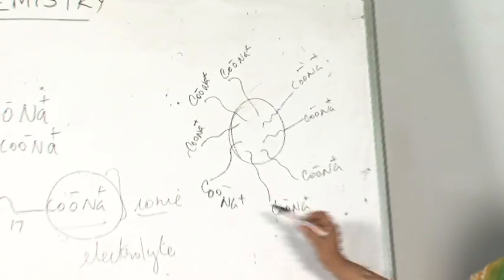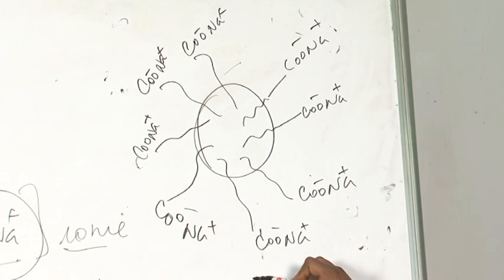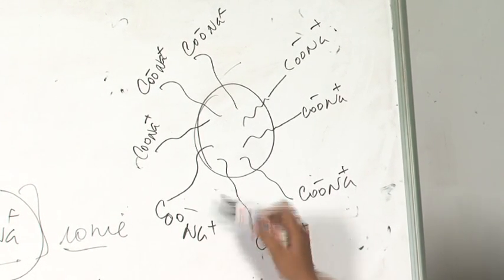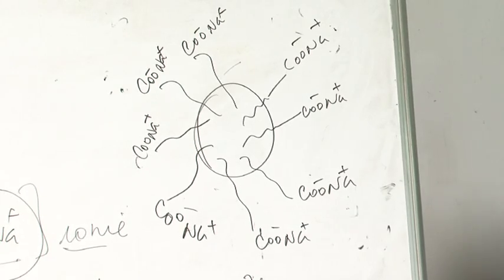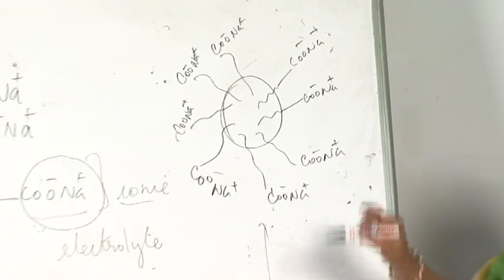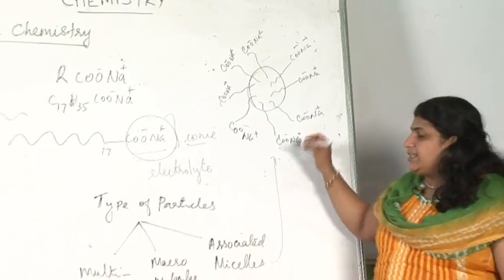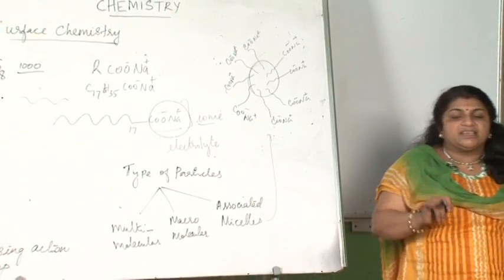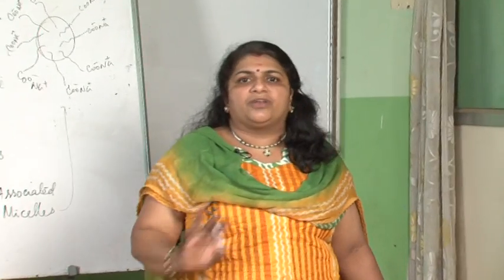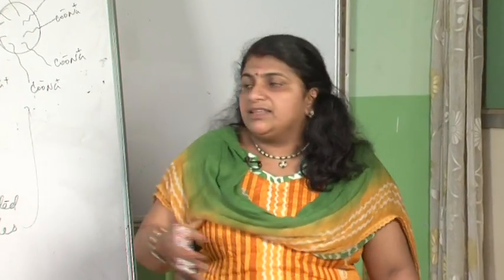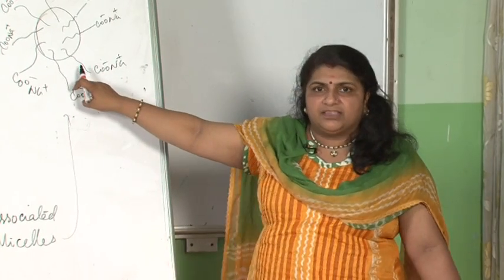At high concentration, soap aggregates together to form a molecule having colloidal dimension. This particular molecule is called a micelle. This micelle has got the cleansing action. On the surface of cloth where there is oil and grease, which is purely organic in nature, the soap molecule forms a micelle like this.